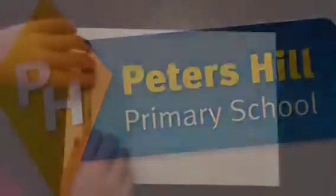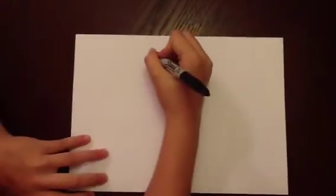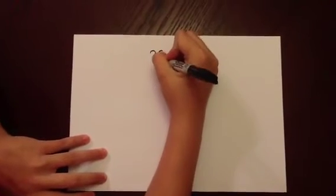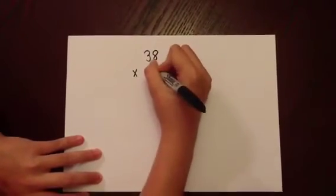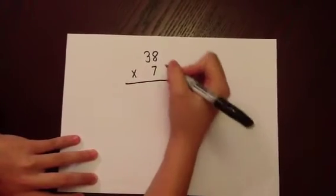Expanded vertical multiplication. As in column addition, it is incredibly important that we keep each digit in the correct column. We are multiplying a two-digit number by a single-digit number, and we will expand this by partitioning into tens and units.